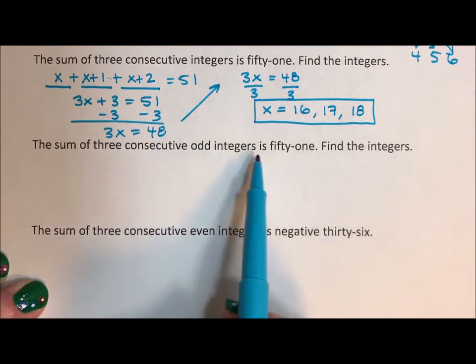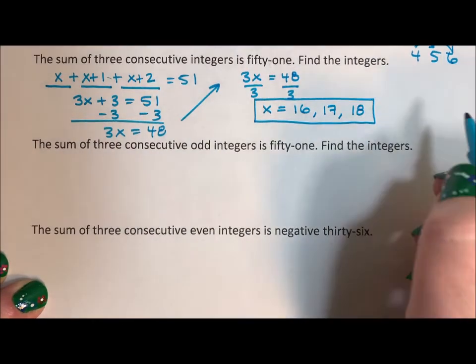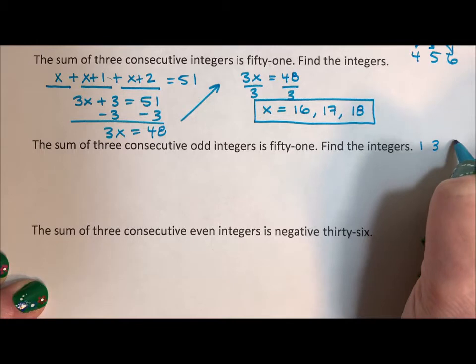The sum of three consecutive odd integers is 51. Find the integers. So instead of lines, I'm going to do parentheses this time. Odd integers, so that's like one, three, five.